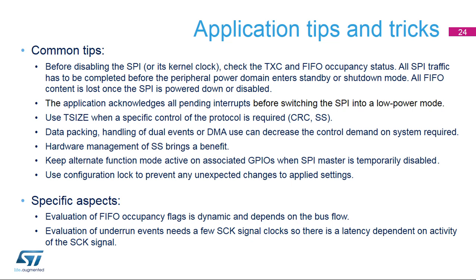These features can help especially when data frames are short and a fast continuous communication flow is required. Hardware management of the slave select signal is not quite necessary in a single master, single slave pair, but it can help synchronize the data flow and prevent conflicts in a multi-master system. When the SPI master has to be disabled temporarily for any reason, the user can prevent any glitches on the associated outputs working at alternate function mode by keeping them under forced control. Then the GPIOs are kept at the state corresponding to the SPI idle configuration. The user should keep all the configuration and settings locked to prevent any accidental changes. There are some additional specific aspects which should be taken into account when designing an SPI network.